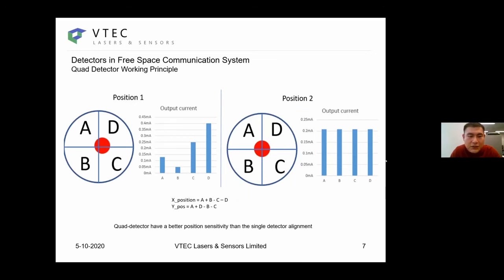This slide shows how the quadrant detectors are behaving for beam alignment. We have a quadrant detector and a collimated beam pointed to the position shown in the figure on the left. There is a red spot which represents the collimated beam. As the light is hitting on different isolated active areas on the four quadrants, the current that is generated is different.